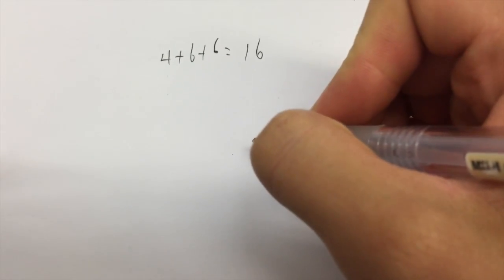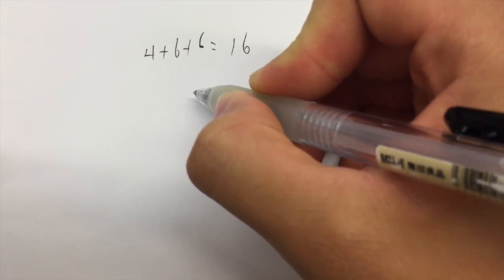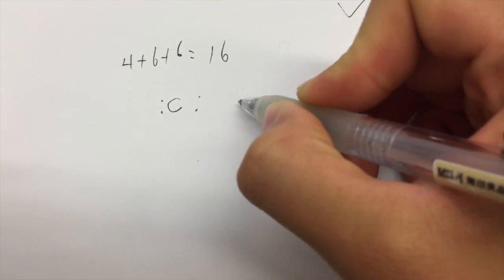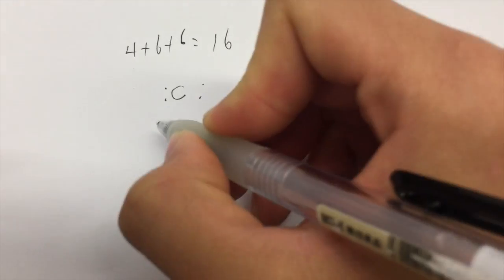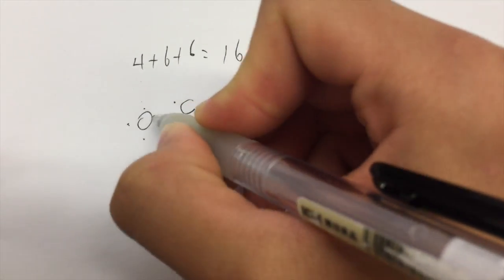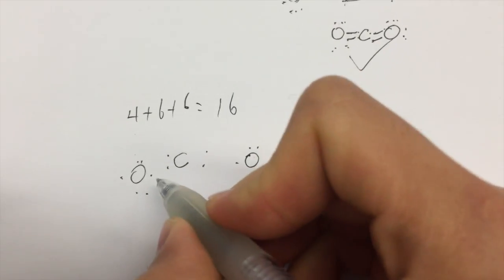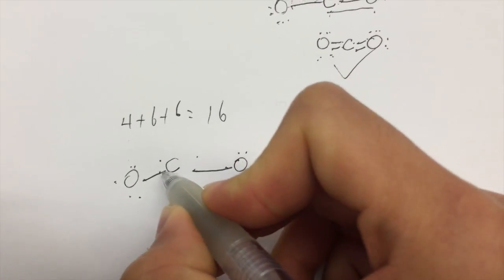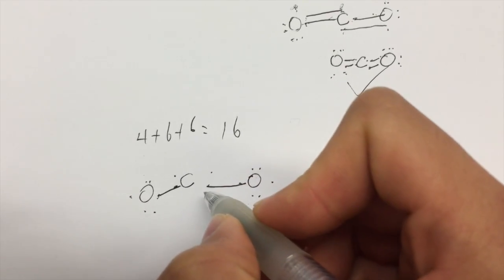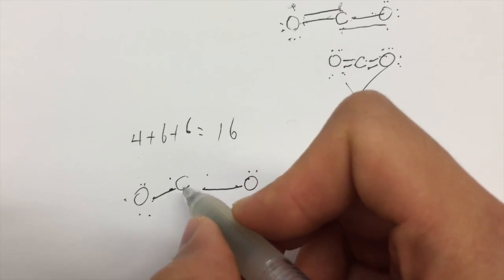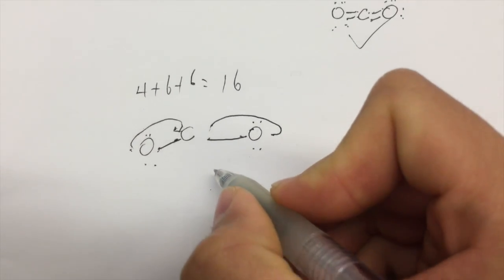We're going to have 16 electrons in the diagram. We put carbon in the middle because it needs the most electrons — carbon has 4 and each oxygen has 6. The atoms share electrons. With a single bond there aren't enough electrons for carbon to reach 8, so we draw another bond — a double bond on each side. The simplified diagram will look like O=C=O.